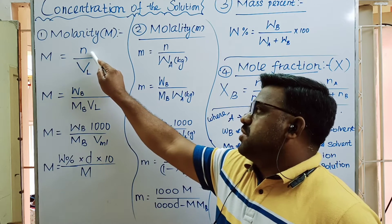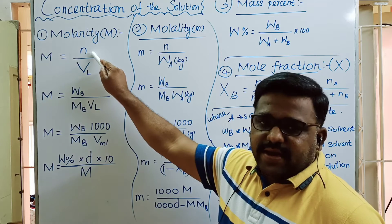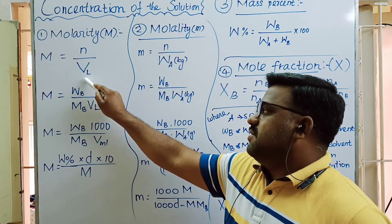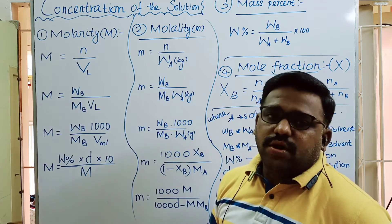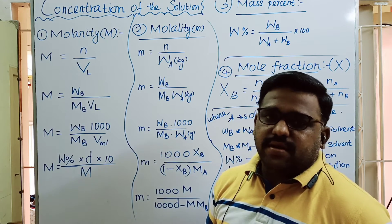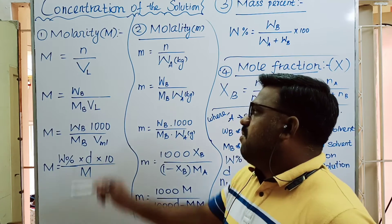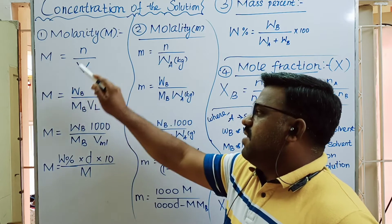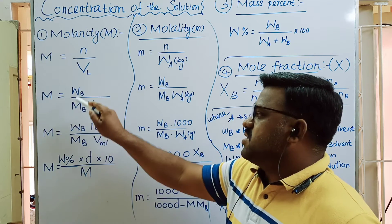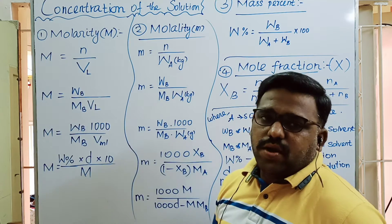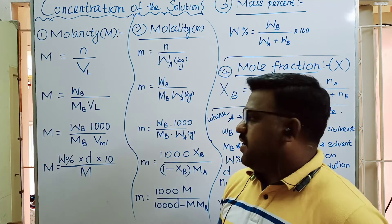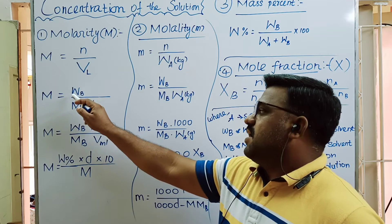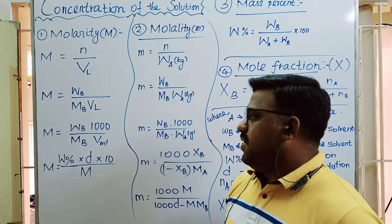So the number of moles is N and VL is 1 liter. Number of moles is given by weight divided by molecular weight. So the second formula is given weight divided by molecular weight.